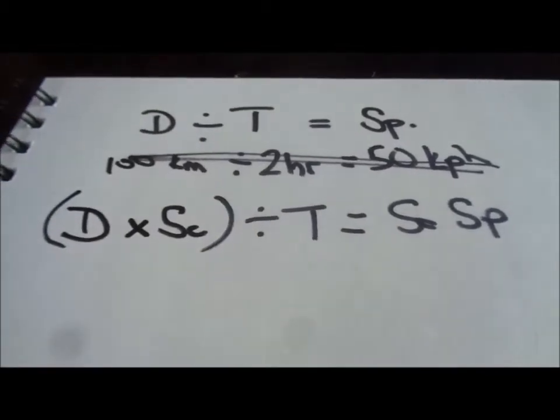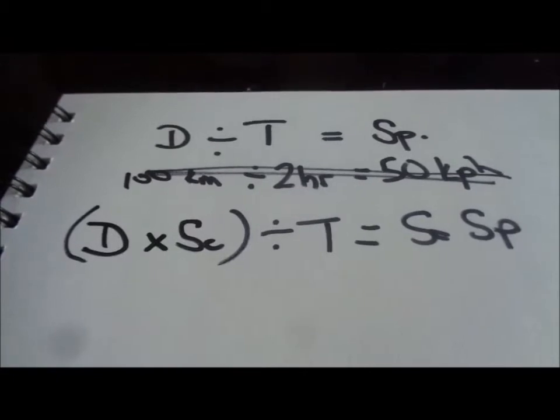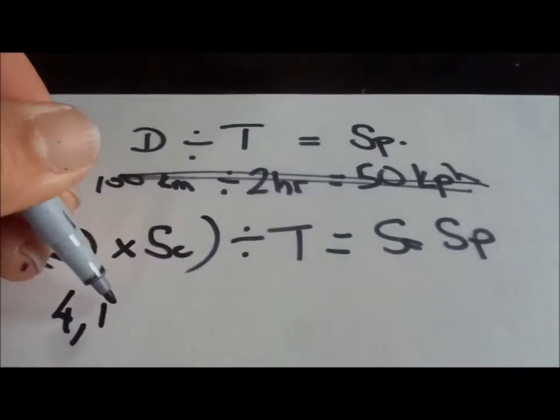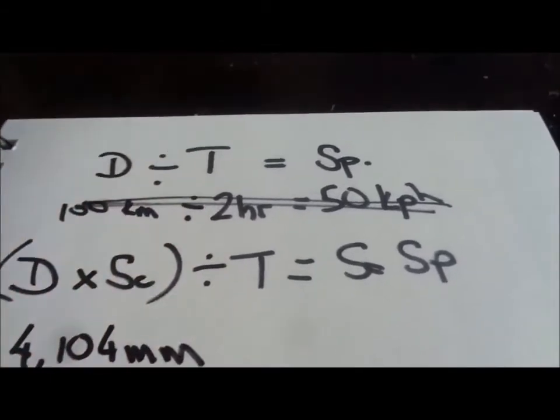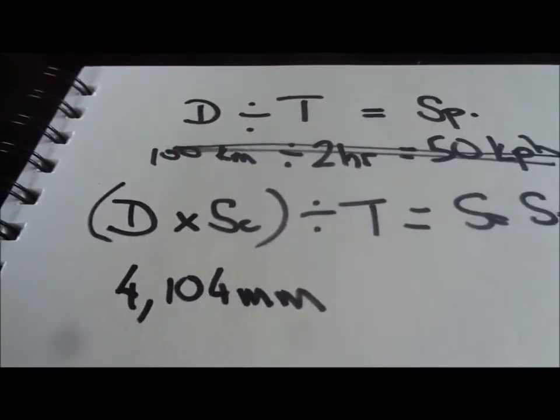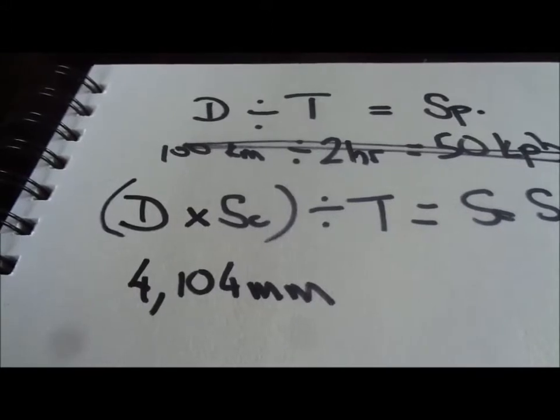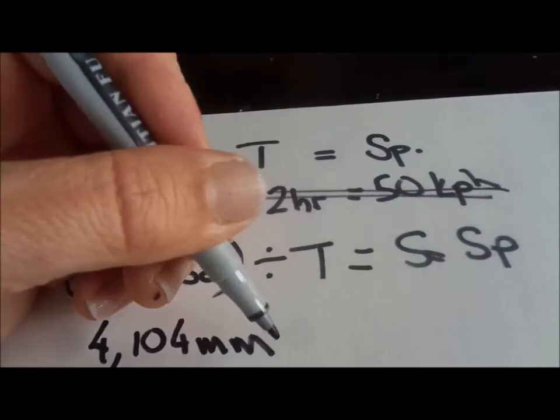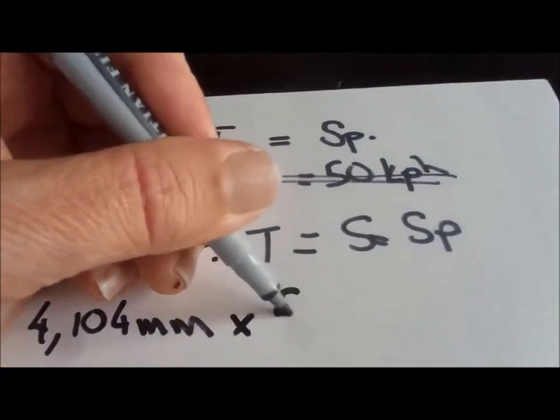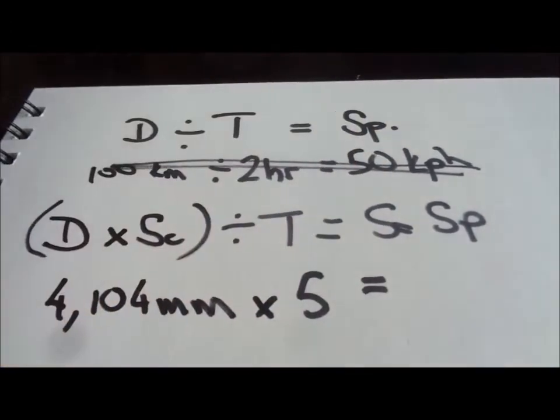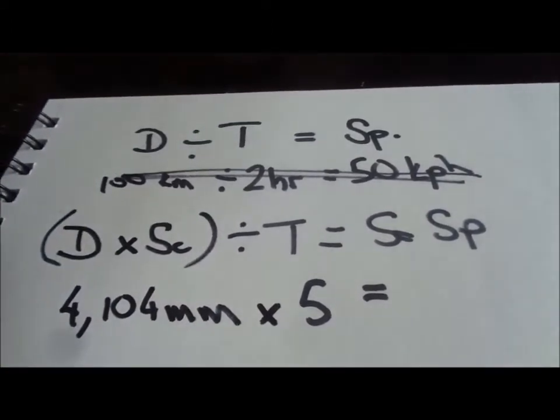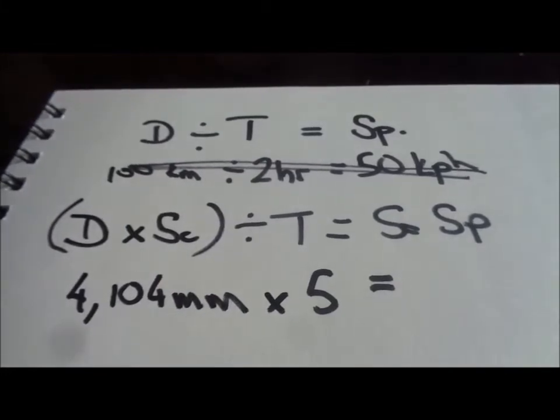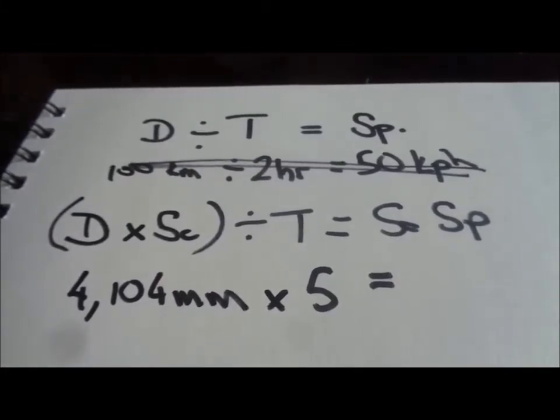Right. We measured the distance around our track, and we found it to be 1,104 millimetres. Then what we did, we went round the track five times to try and get a more accurate and averaged out speed. So we multiply that by five. Archie, off the top of your head, what's that multiplied by five? I can't remember that far, but I think the answer's 20,520.